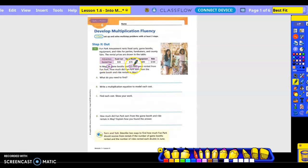In May, 36 games and 14 rides are rented from Fun Park. How much did the Fun Park earn from the game booth and ride rentals? So what numbers are we using? 36, and we're looking for how much did they earn. Write the multiplication equation to find or to model each cost. So we're going to do 36 times 79 equals, and then we're also going to do 14 times 149.